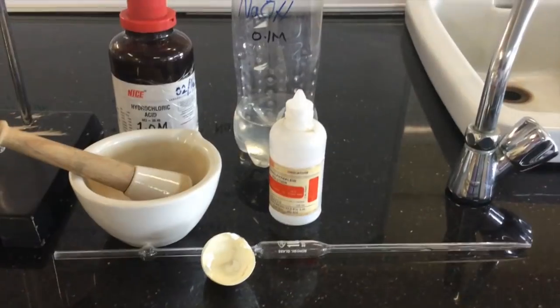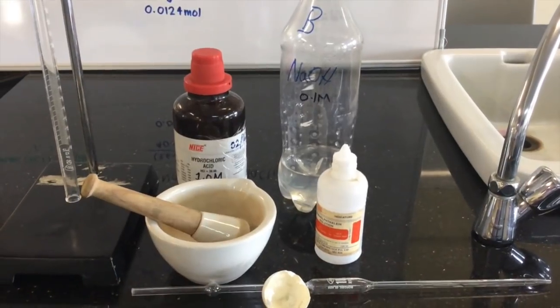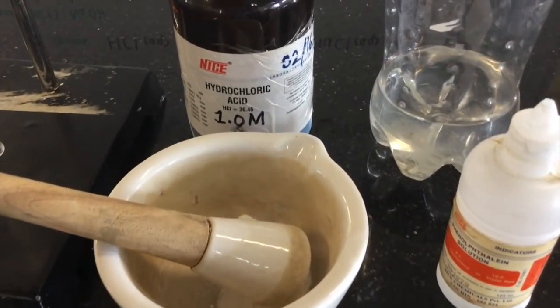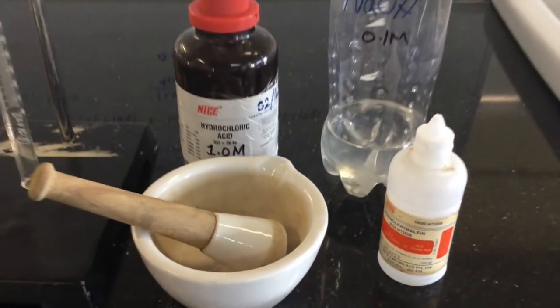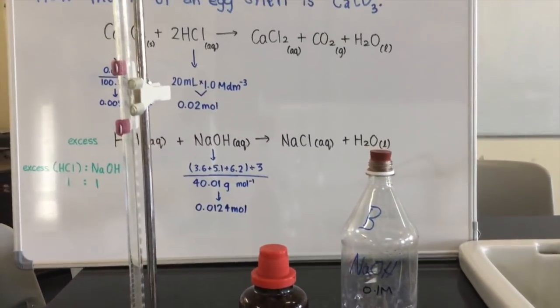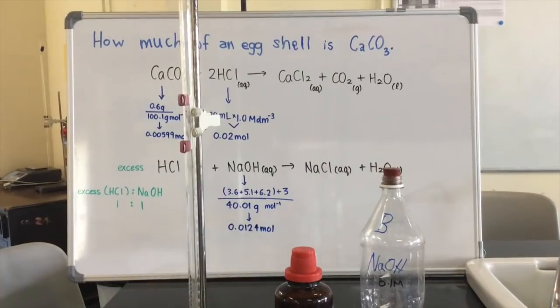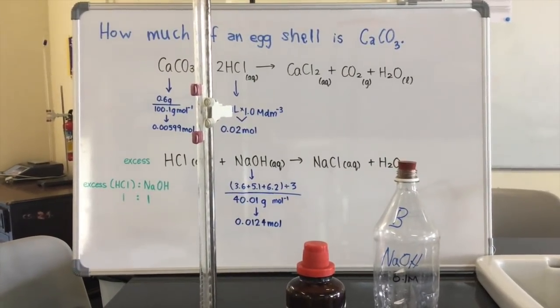Before we get into the actual investigation, we will try to predict the outcome of our analysis, assuming that all of the 0.6 grams that we are about to use in this analytical method is made of calcium carbonate.